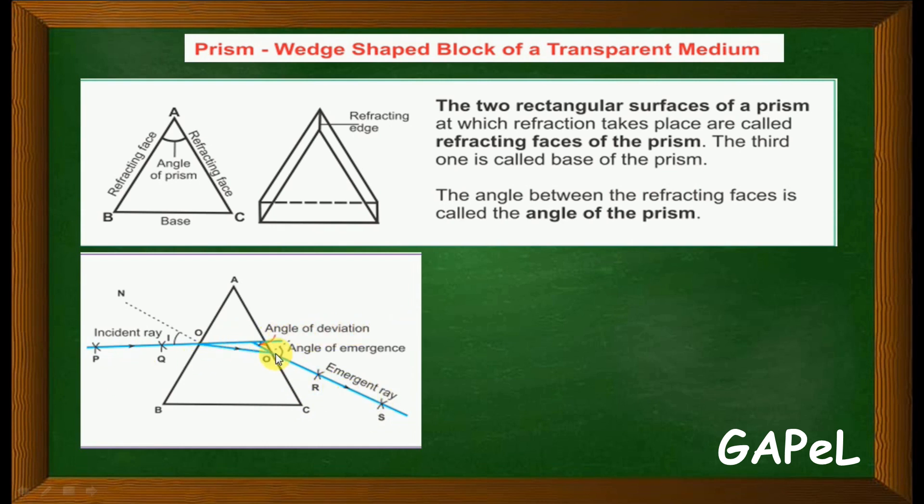This angle becomes your angle of deviation - how much it deviates from its original path. The angle of deviation is formed by extending the line of incidence and joining it with the emergent ray. That is the angle of deviation.